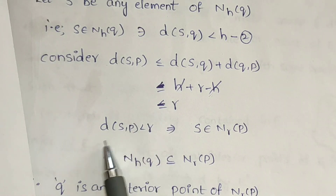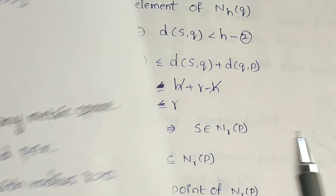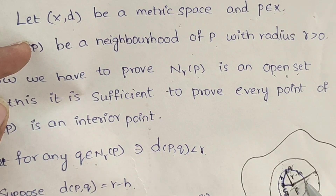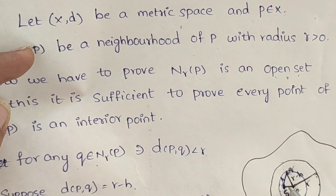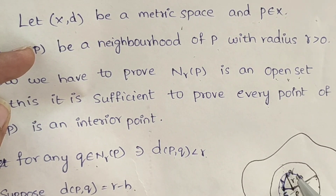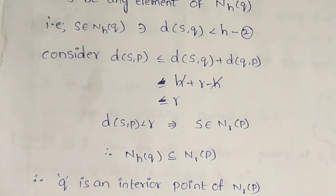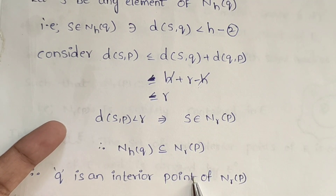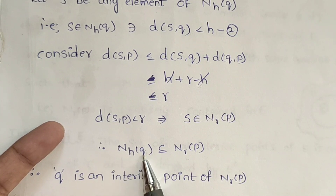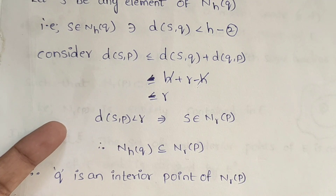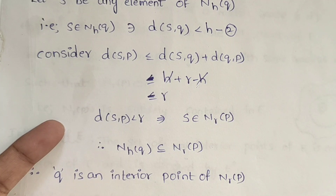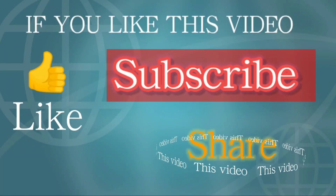So d(s,p) is less than or equal to r, which means s is in the neighborhood of p. Therefore we can show the interior point exists, and we can prove that neighborhoods are open sets in a metric space.